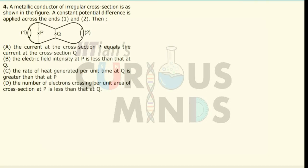A metallic conductor of irregular cross-section area is as shown in the figure. A constant potential difference is applied across ends 1 and 2. We have to verify the various statements over here.